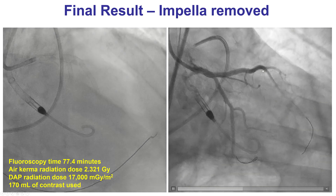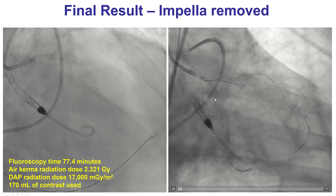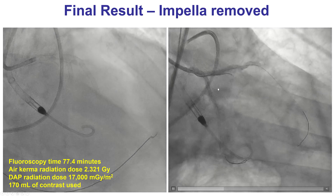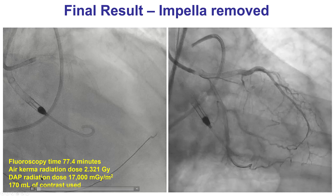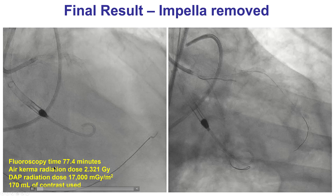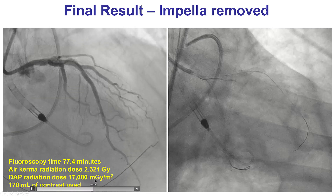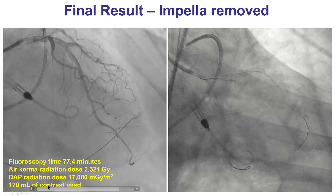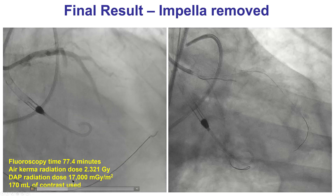We achieved excellent outcomes in the LAD-diagonal, circumflex-obtuse marginal, and left main bifurcations. The procedure took 77 minutes of fluoroscopy time, 2.3 gray of radiation, and 170 mLs of contrast.